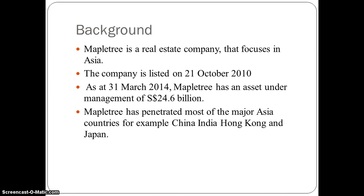A little bit of background on Maple Tree. Maple Tree is a real estate company that focuses its business in Asia. The company was listed on 21st October 2010. As at 31st March 2014, Maple Tree has an asset under management of $5,246 billion. Maple Tree has penetrated most of the major Asian countries, for example China, India, Hong Kong and Japan.